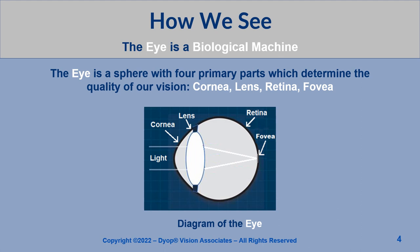To understand how we see, we need to realize that the eye is a biological machine. The eye is a sphere with four primary parts which determine the quality of our vision: the cornea, lens, retina, and fovea.